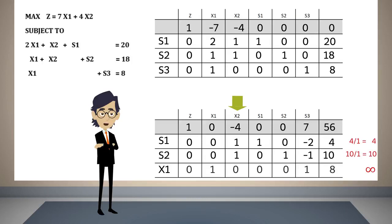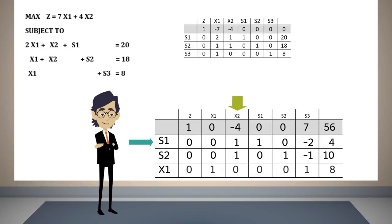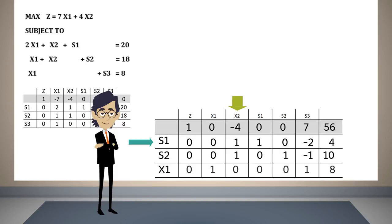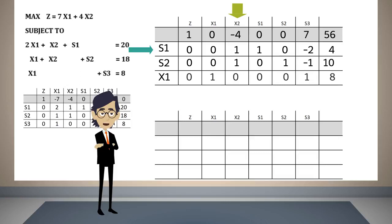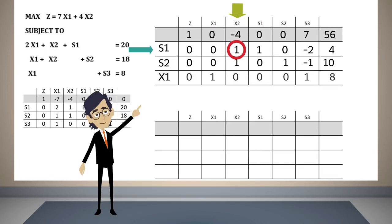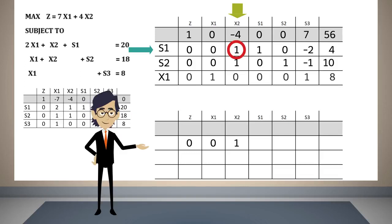Since we select the constraint that limits the most the growth of x2, the variable x2 will enter the basis replacing s1 in the first constraint. We observe the number found at the intersection of the entering variable and the leaving variable, move this row to the third table dividing by that number. The new basic variable in this row is x2. This is the pivot row, and with it we will convert to zero the other elements in the x2 column.